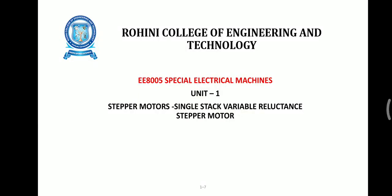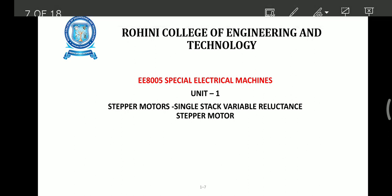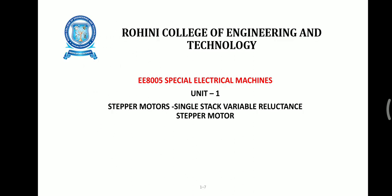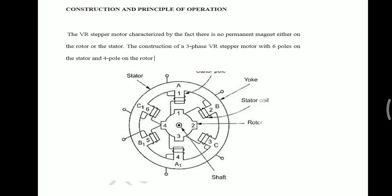Welcome to the course E8005 Special Electrical Machines, Unit Number 1: Stepper Motor - Single Stack Variable Reluctance Stepper Motor. Here we are going to see the operation of the single stack variable reluctance stepper motor and its construction.